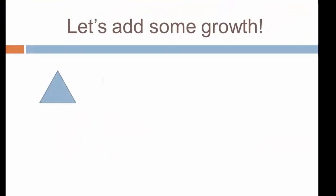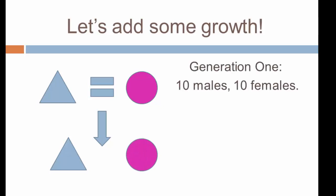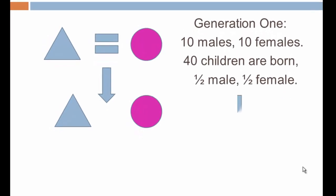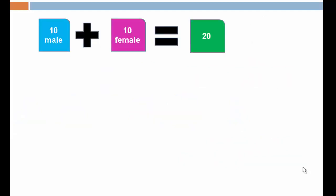Now let's add some growth. This is a simple fertility-driven model. The first generation is 10 males and 10 females, but now 40 children are born to that generation. On average each woman has four children that survived to adulthood, half male and half female. In generation two we now have a population of 40, with 20 males and 20 females — the population is doubling from one generation to the next.